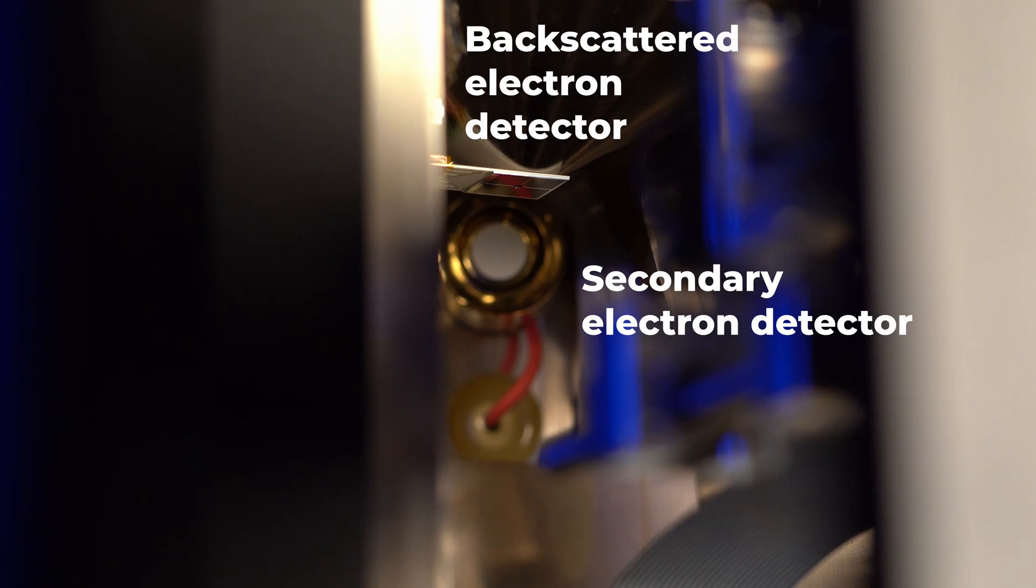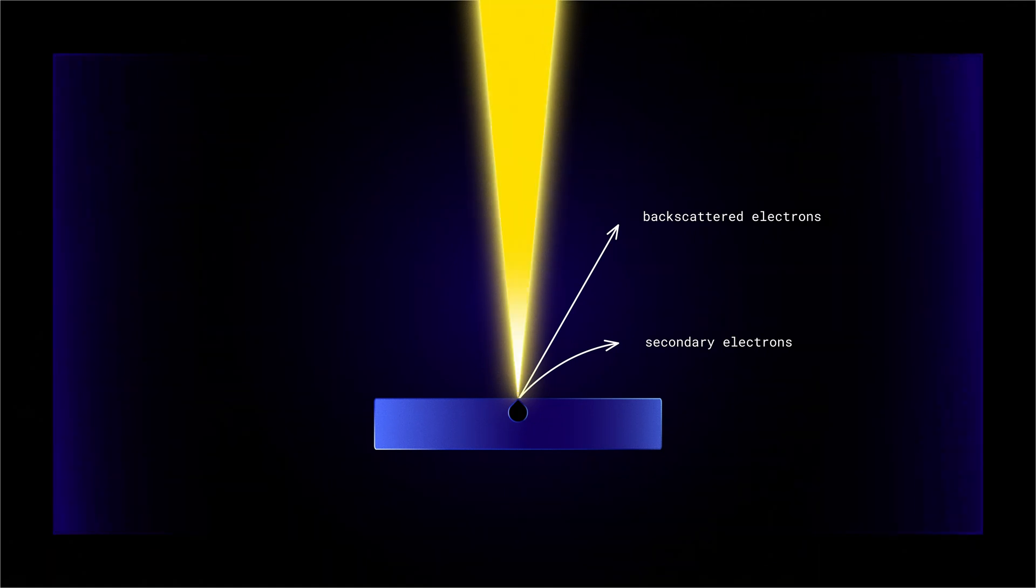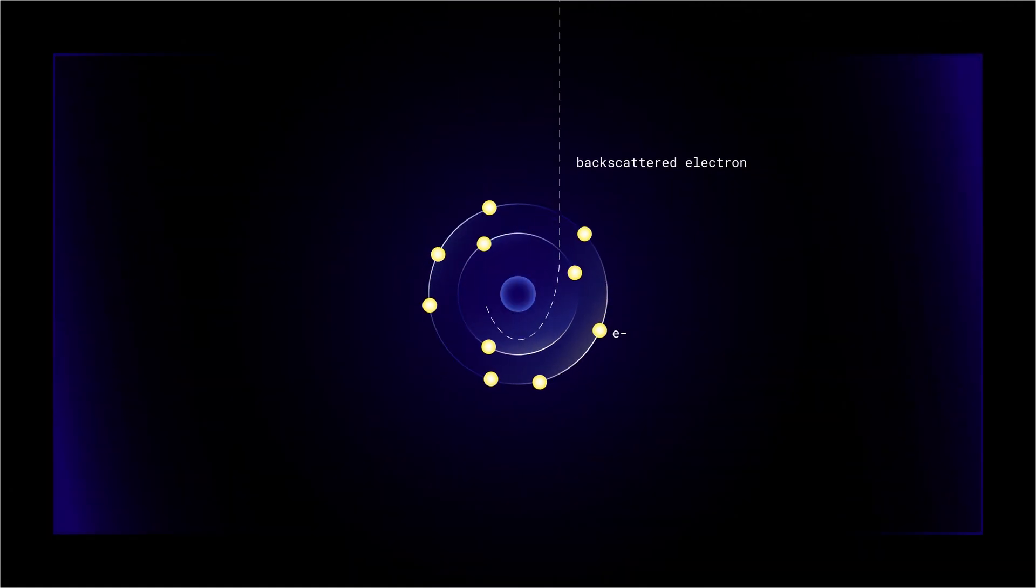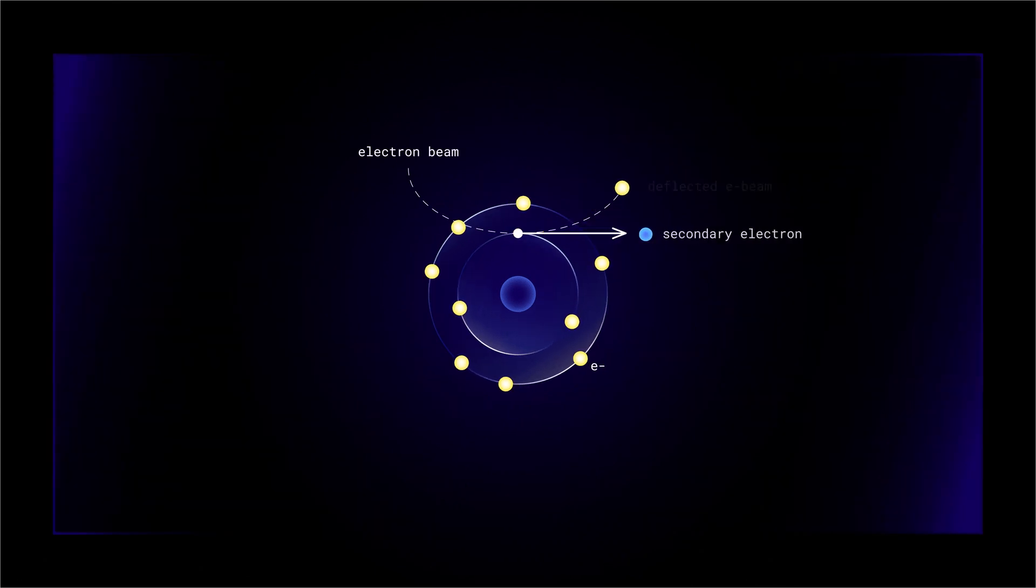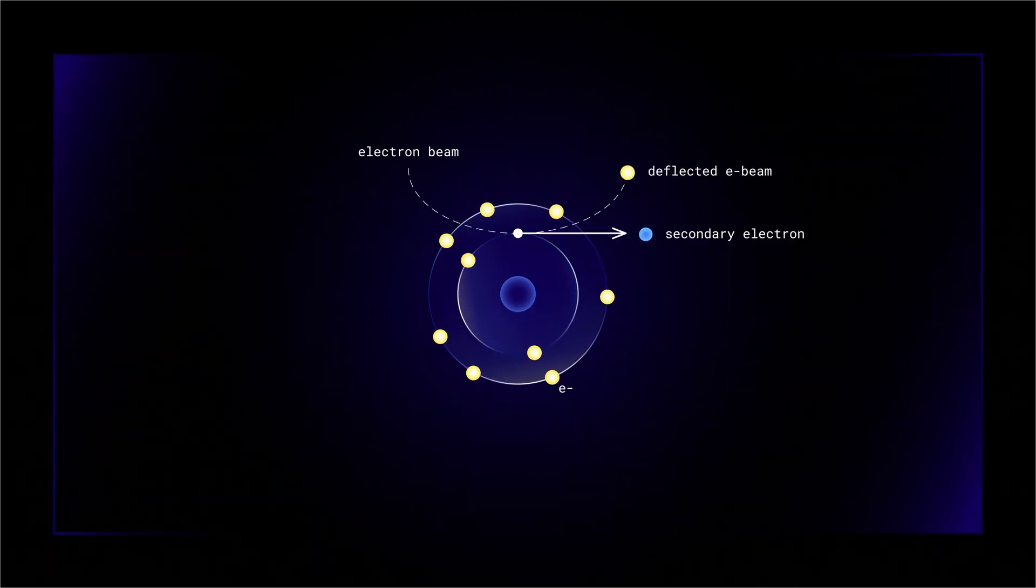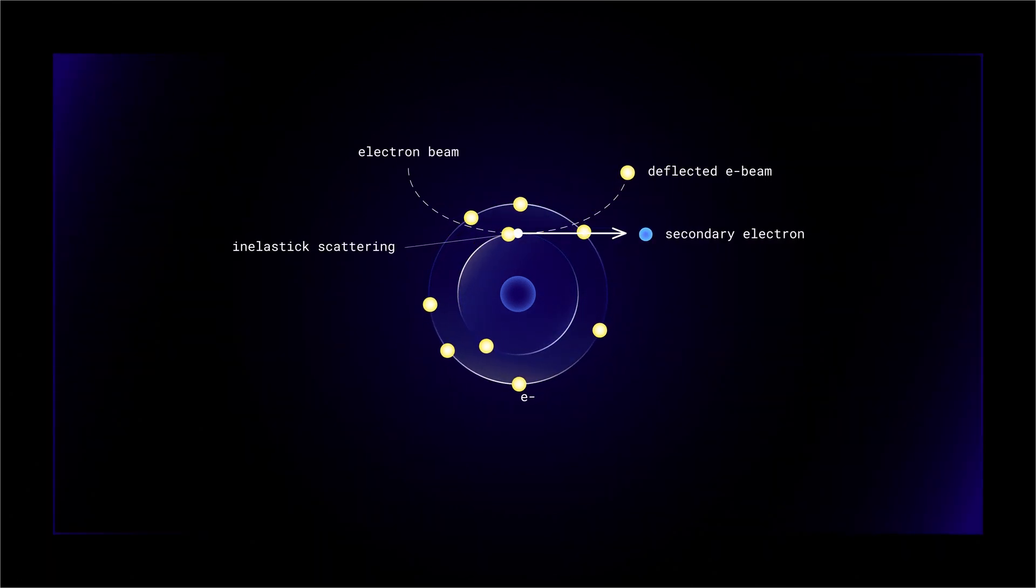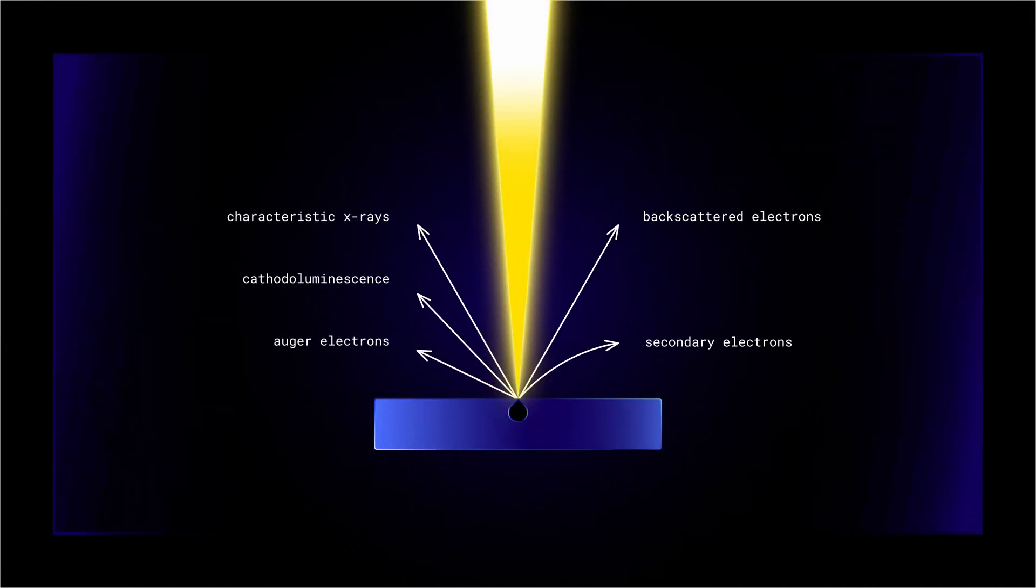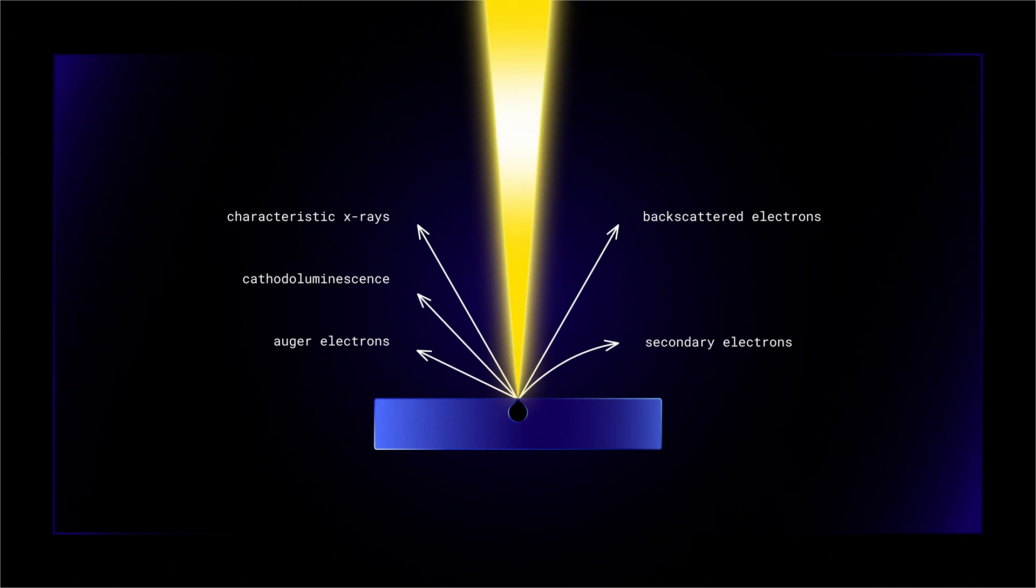In our case we have two detectors – secondary electron detector and backscattered electron detector. When the electron beam hits the sample it interacts with the atoms in that sample. There are a number of outcomes. Some electrons bounce back out of the sample called backscattered electrons. Others knock into atoms and displace electrons which in turn come out of the sample called secondary electrons. Alternatively, x-rays and light or heat in the sample can be the result of these interactions.